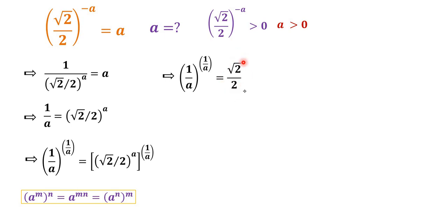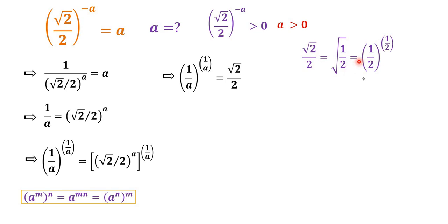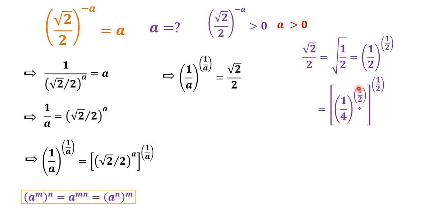Now think about how to rewrite the value square root 2 over 2. Square root 2 over 2 equals square root of 1 over 2, which equals (1 over 2) to the power of 1 over 2. The tricky part is that 1 over 2 equals (1 over 4) to the power of 1 over 2, then to the power of 1 over 2, which equals (1 over 4) to the power of 1 over 4.